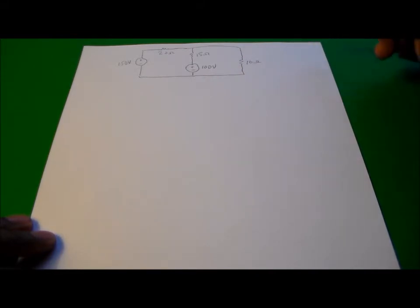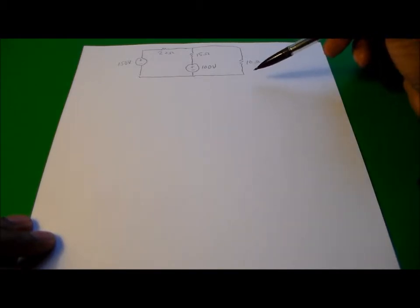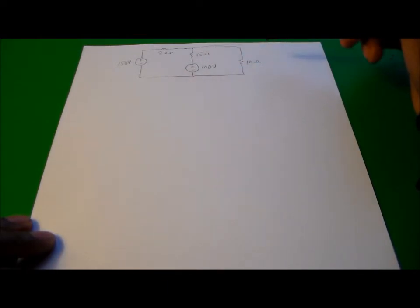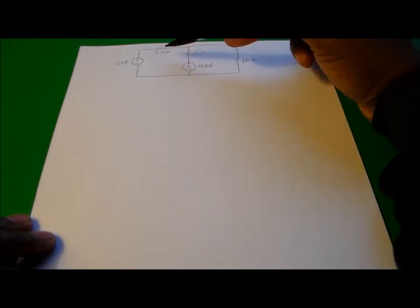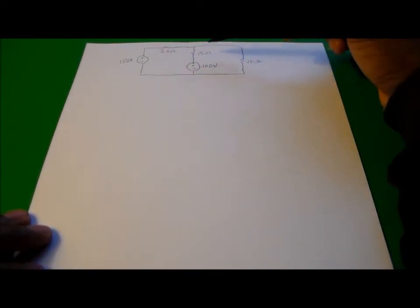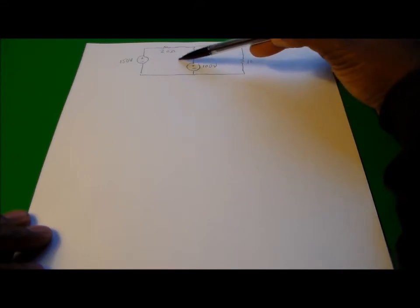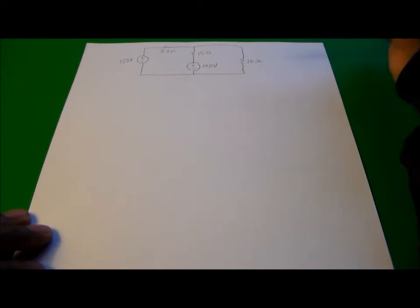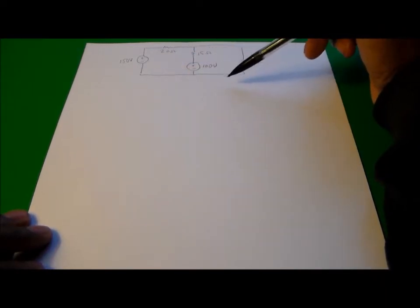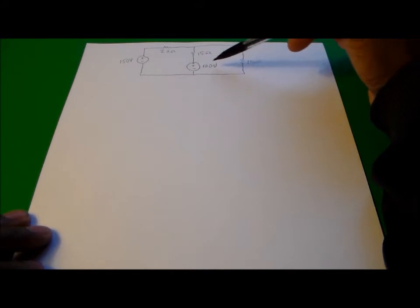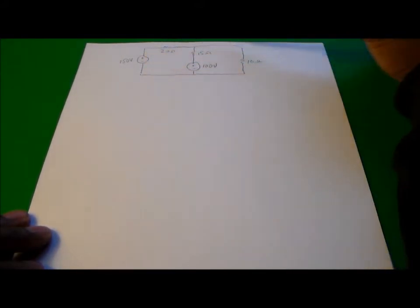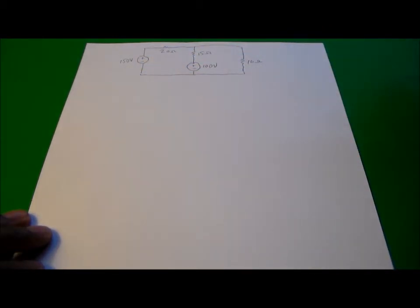Mesh analysis utilizes Kirchhoff's voltage law. In order to use mesh analysis to find the currents, we need to identify the meshes. We have two meshes here — one mesh on the left and a second mesh on the right. A mesh is the smallest loop you can find within a given circuit. We have three loops within this circuit, but only two of them are meshes; the loop on the outside is not considered a mesh.